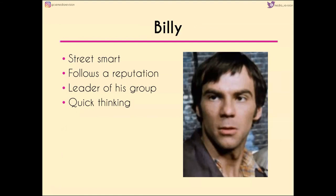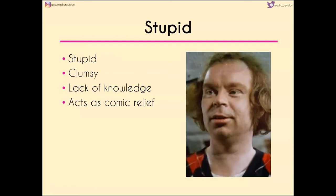Billy is street smart and follows a reputation. He's trying to build his own reputation, but he also has one already because his older brother is in prison and he comes from a family where the boys are getting into trouble. Billy is clearly the leader, partly because of his quick thinking — when he sees the photos he recognises their worth and goes straight to Brooker. Stupid, on the other hand, is as per his name: quite stupid and clumsy, which we can see from his dress codes too — very unkempt and not well put together. This links with his name but also makes him a source of comic relief, breaking the tension throughout the episode. He also has a lack of knowledge both intellectually and in terms of street smarts and the gangs holding all the power.